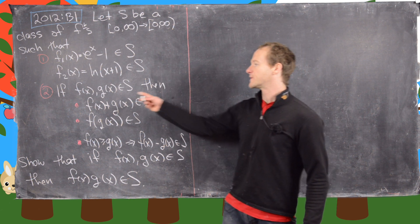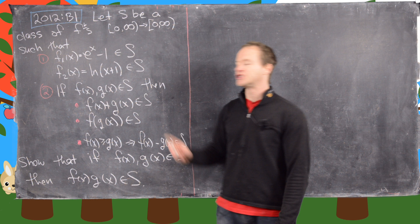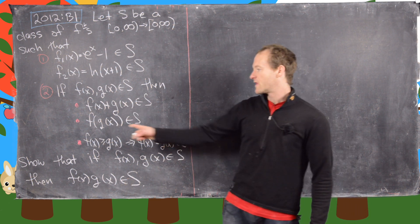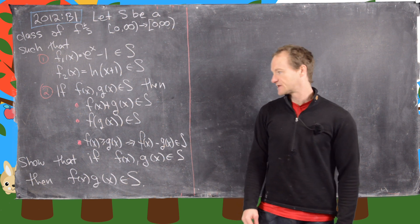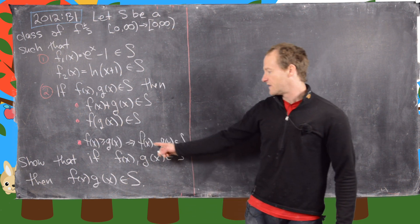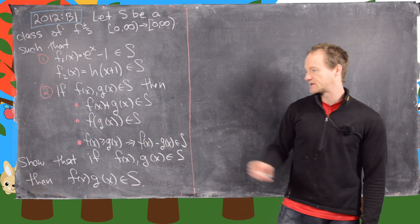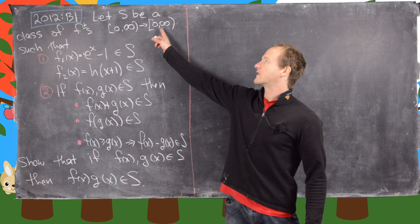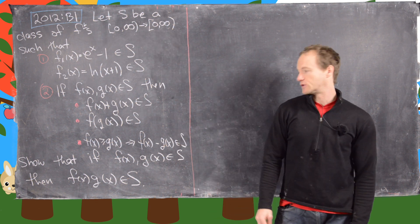And then we have this rule that says if f and g are in S, then their sum is in S, their composition is in S, and then further, if we know that f is bigger than g, their difference is also in S. Notice we need this ordering to maintain the fact that the codomain is zero to infinity.